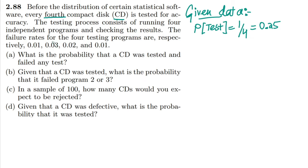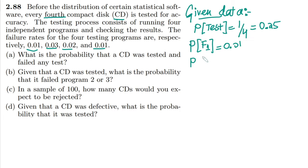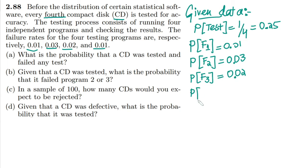The failure rates for the four testing programs are respectively 0.01, 0.03, 0.02, and 0.01. So the probability of failure in test 1 is 0.01, probability of failure in test 2 is 0.03, probability of failure in test 3 is 0.02, and probability of failure in test 4 is 0.01.